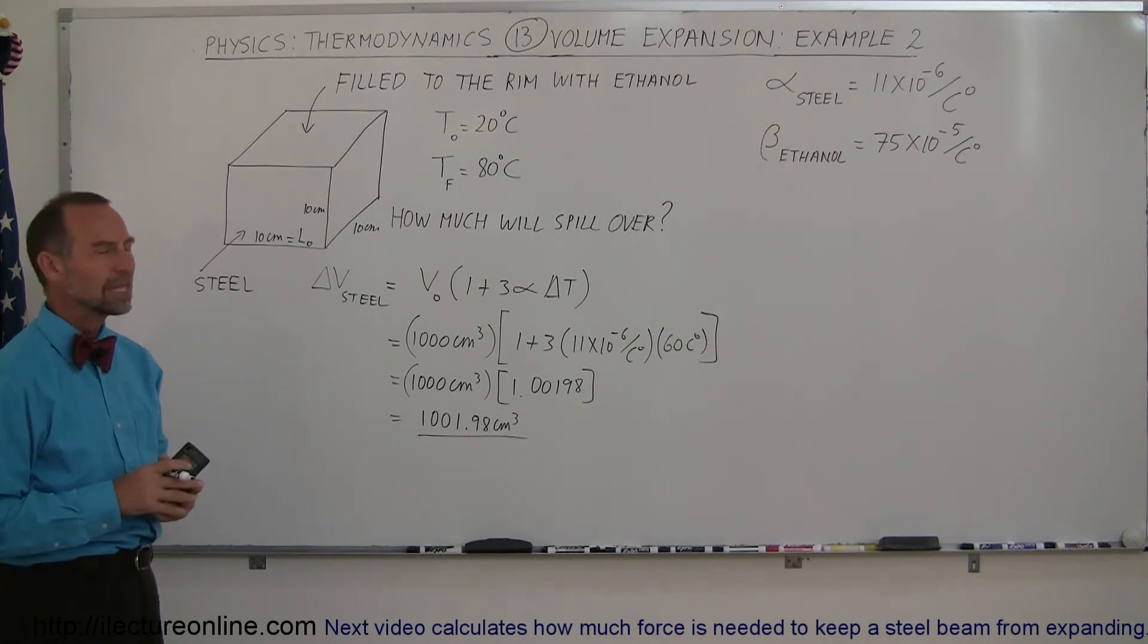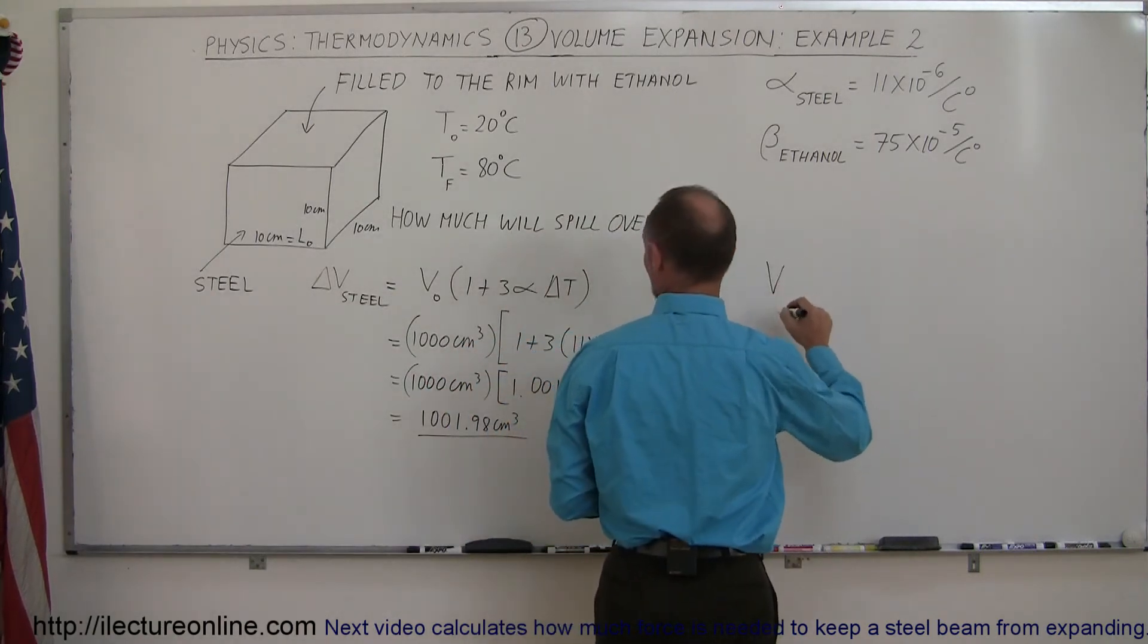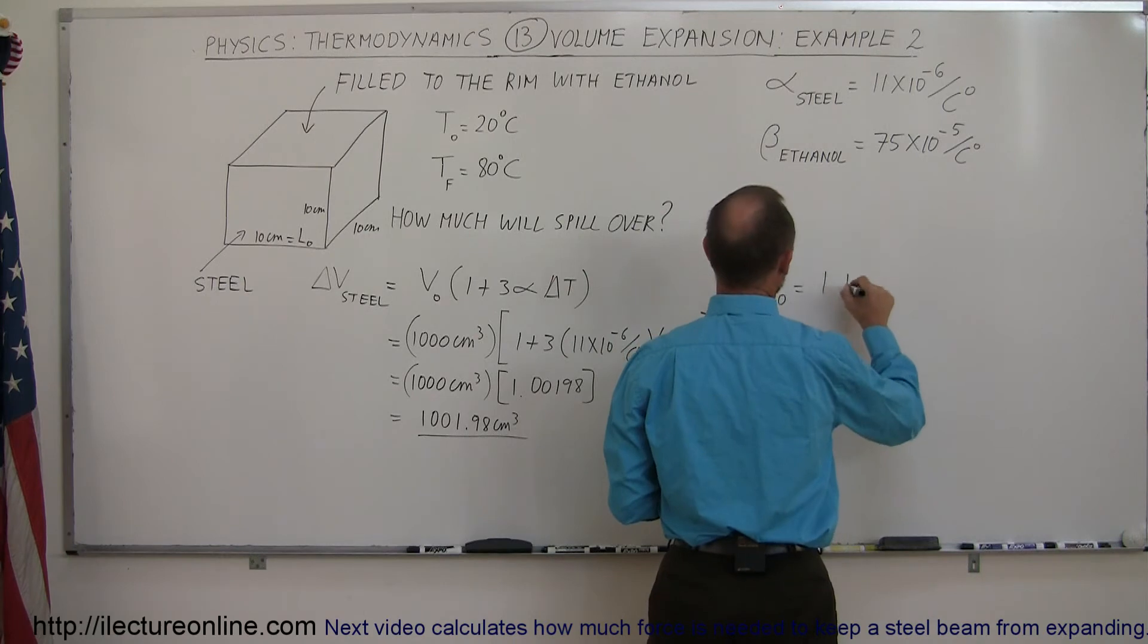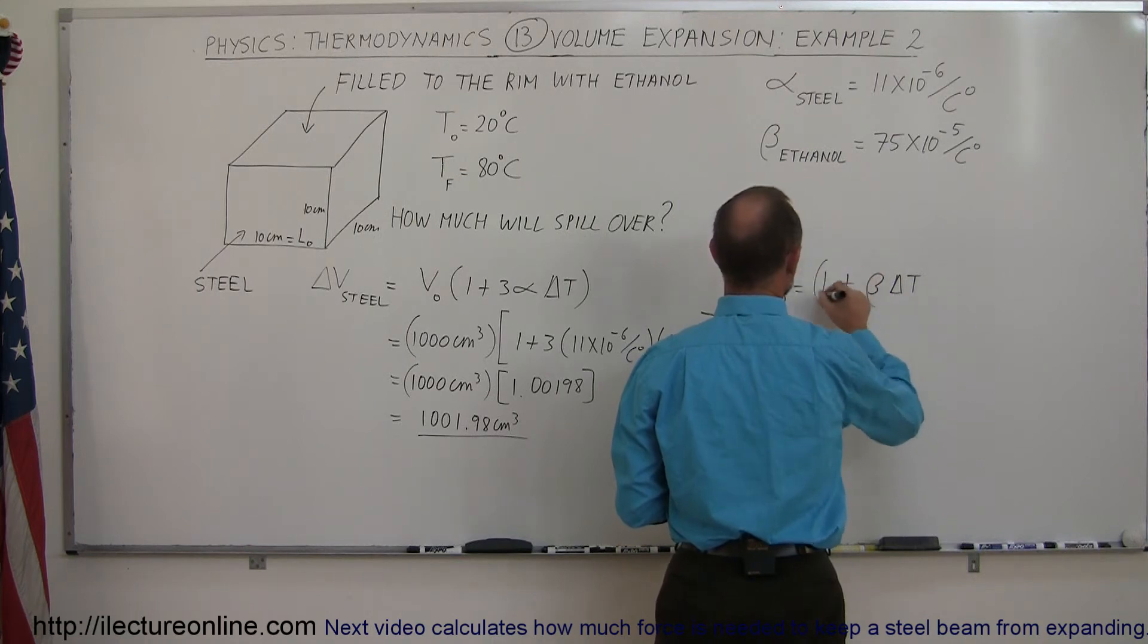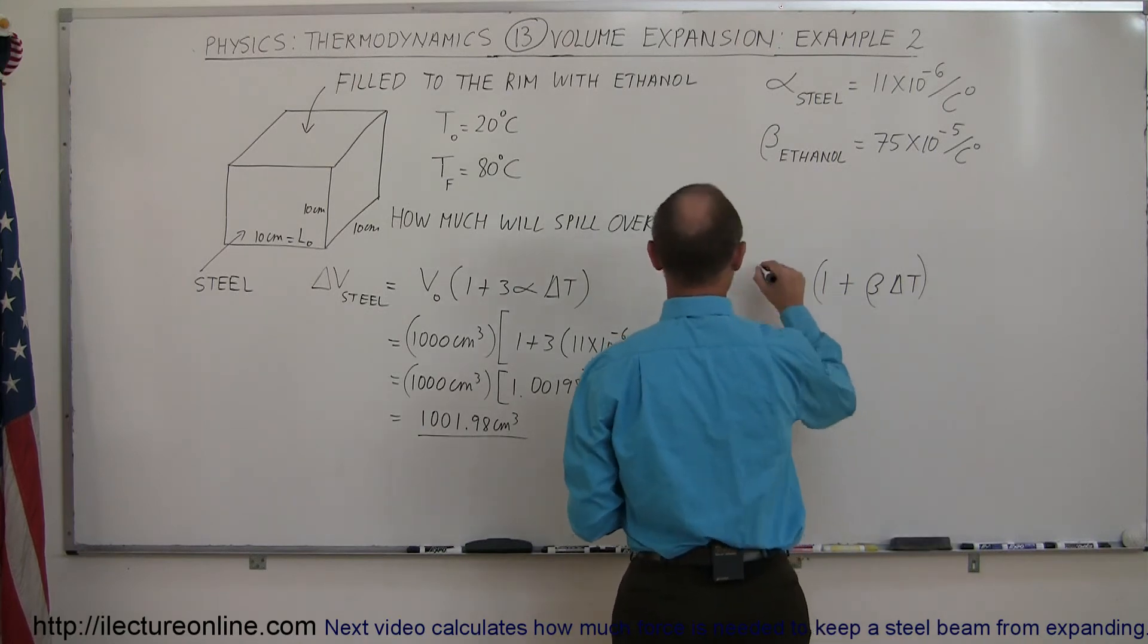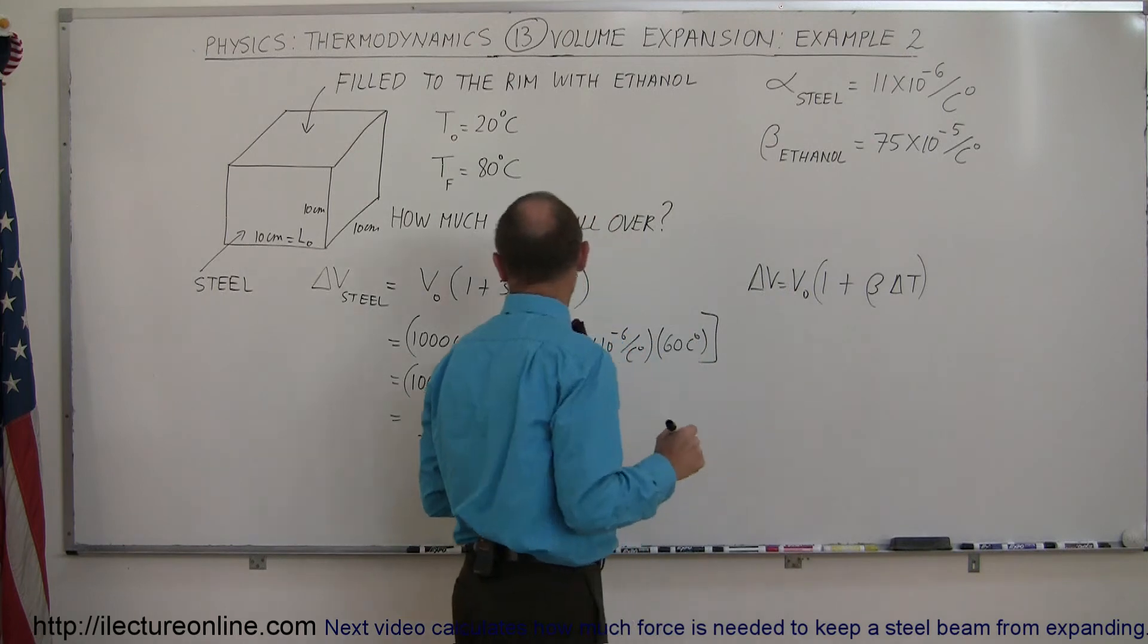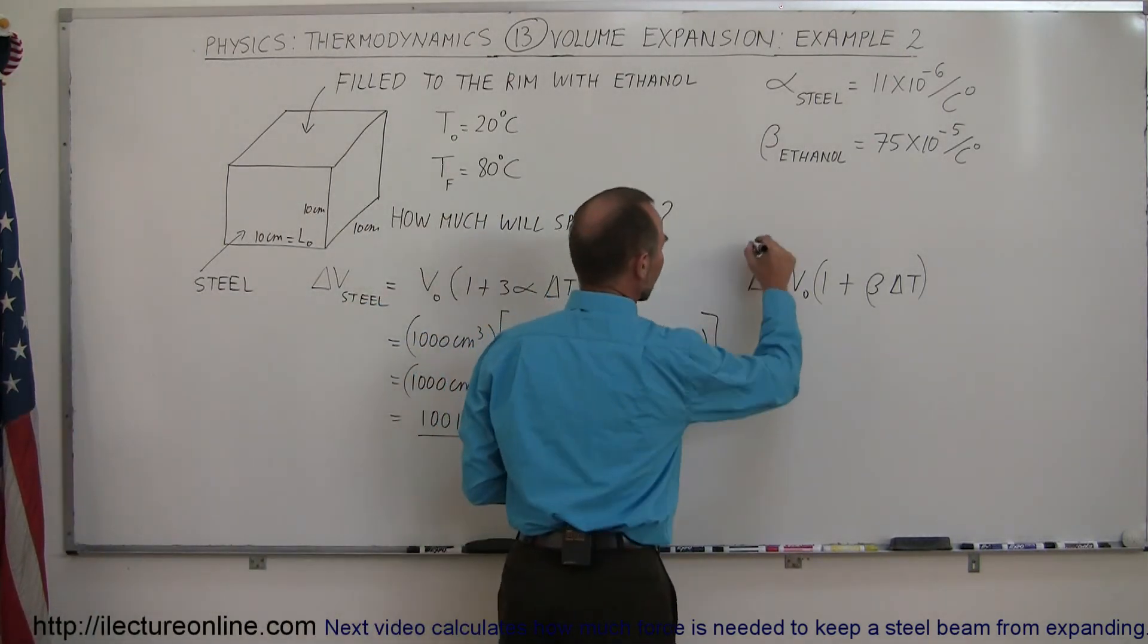So how much would the ethanol increase with the same temperature change? So we could say that the volume change is equal to 1 plus beta times delta T. And then we have to multiply times the original volume. So the delta V, the change in the volume, is equal to original volume times 1 plus beta delta T. And let me write ethanol here, so for ethanol.